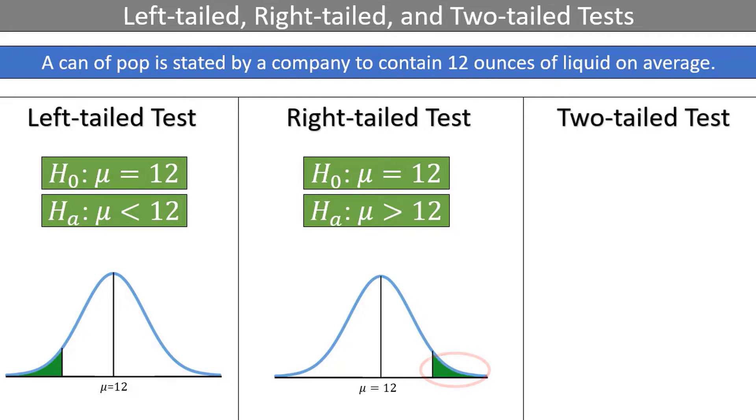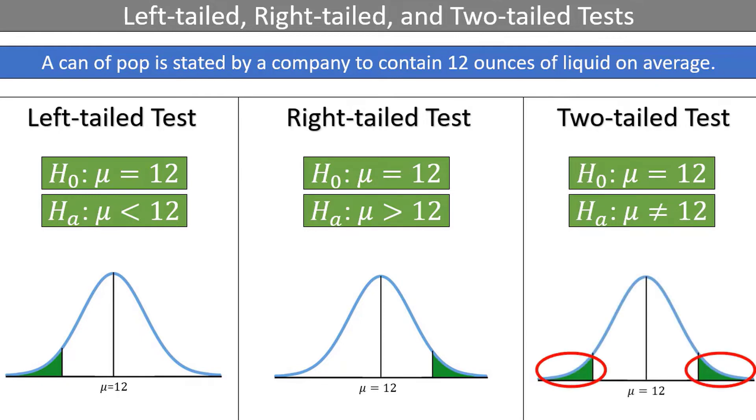A two-tailed test is used when we believe the population parameter differs in some way from the stated amount, but we aren't sure in which direction. This would be like saying we believe the cans of pop don't contain 12 ounces of liquid, but we aren't sure if the true value is larger or smaller than 12. In this case, the alternative hypothesis would be mu is not equal to 12, and we will reject the null hypothesis if the sample result falls into either of the two extreme tails of the distribution. I showed this example with the population mean, but hypothesis testing could be done with a population proportion, the difference of means, or with a variety of other values.